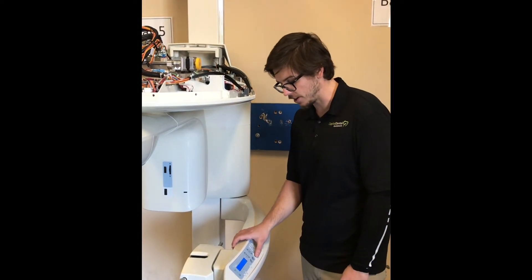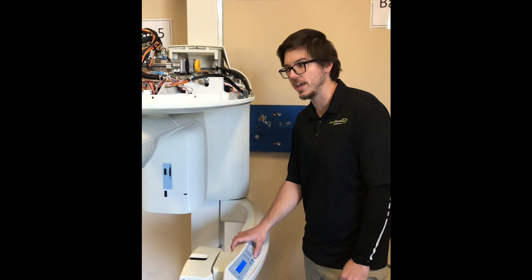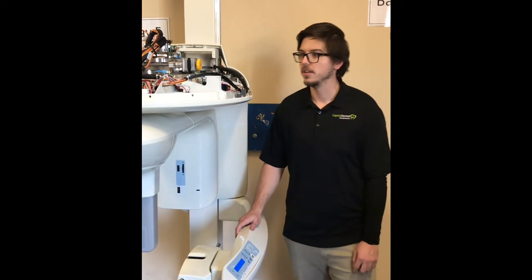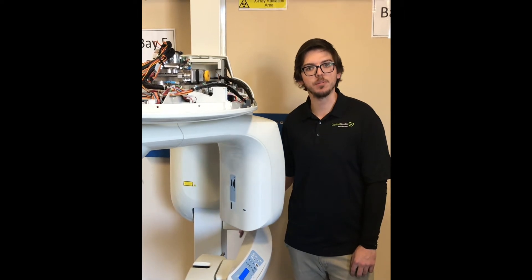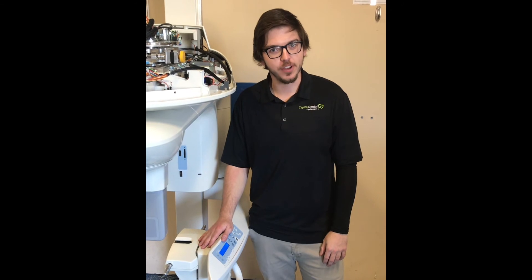Once you've successfully done that, you're going to hit the rotation or home button once again. And when that successfully finishes, your machine will be ready to acquire an image. That is how you successfully clear out an E42 error.